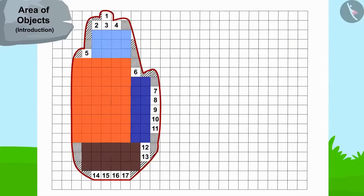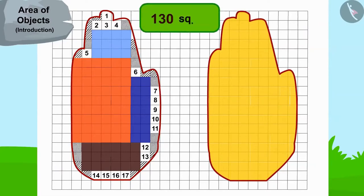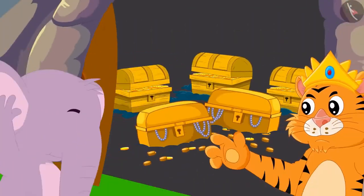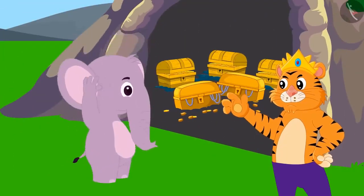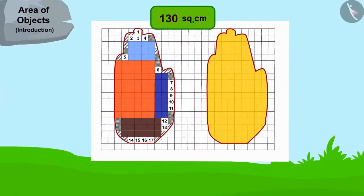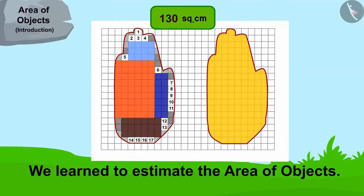Appu's hand impression matched the impression on the cave door. The king opened the door with Appu's help and gave him half of the treasure in return. In this video, we learned to estimate the area of objects. In the next video, we will learn more about it through some interesting examples.